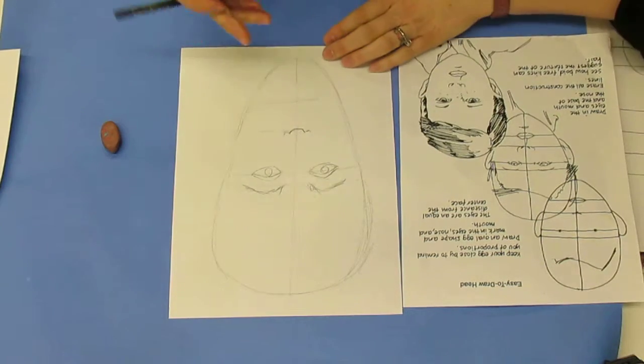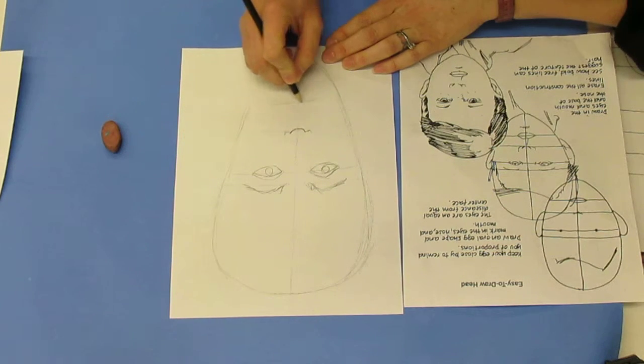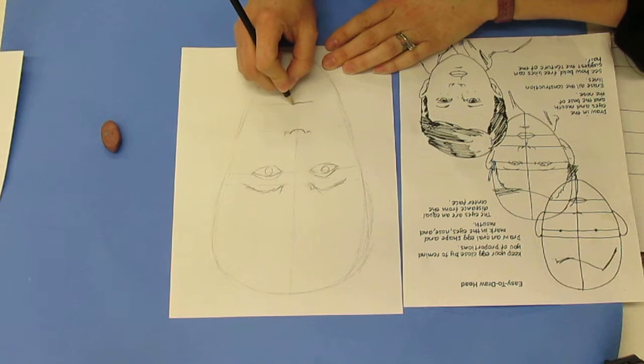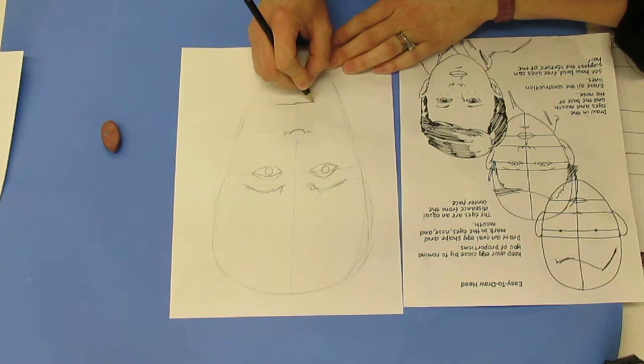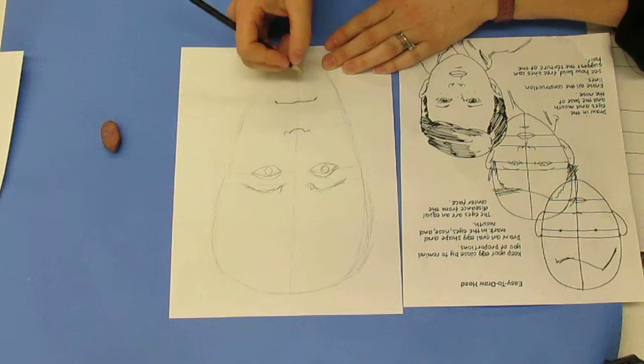Next I can start working on my mouth. When I draw my mouth, the first part is going to be that line where my two lips meet. I'm going to look in the mirror and draw my line the way I see it. Mine kind of tips down in the corner a little bit. I'm not sad, that's just the way my lips meet.